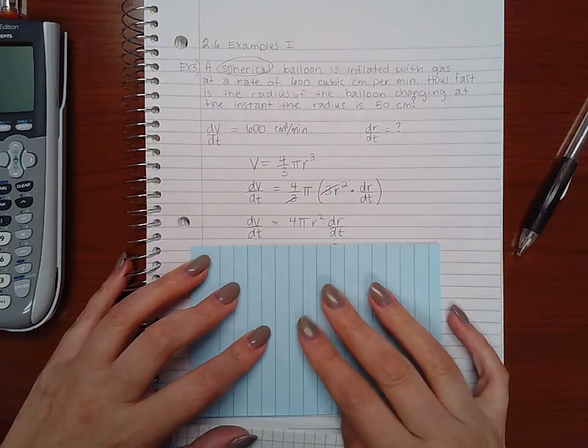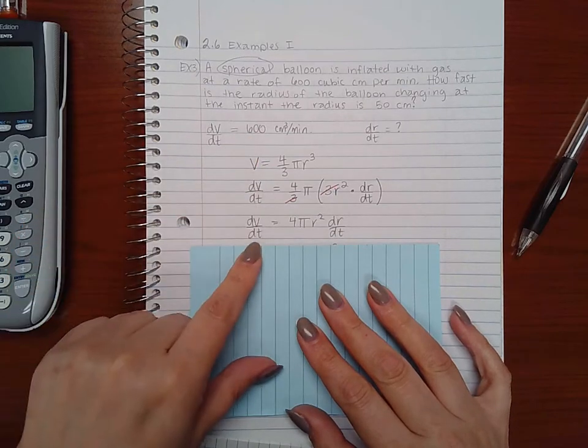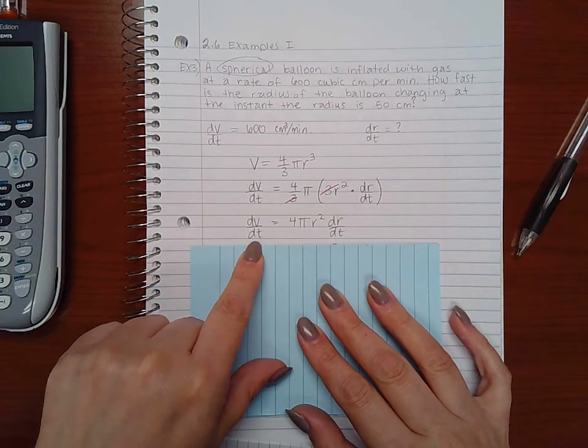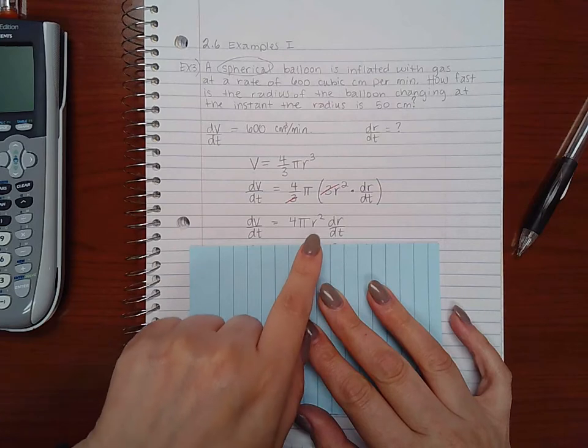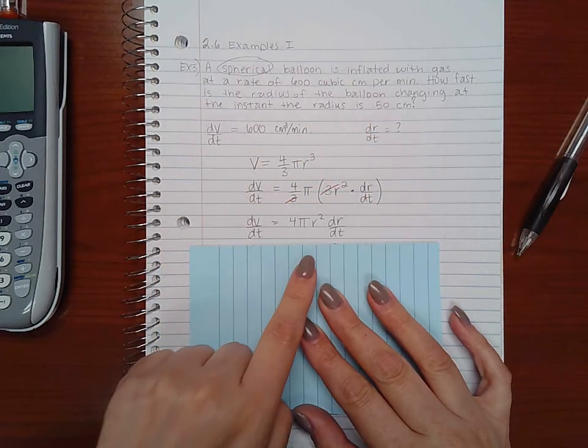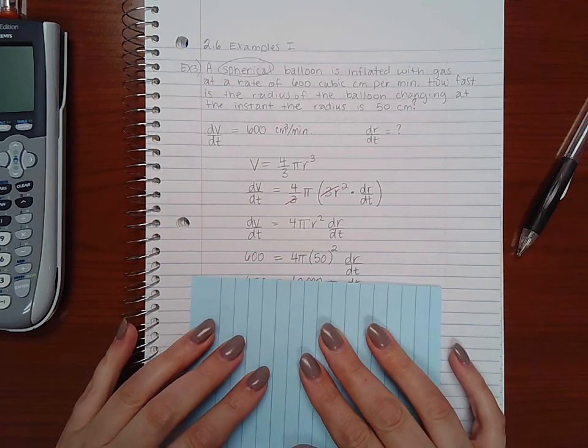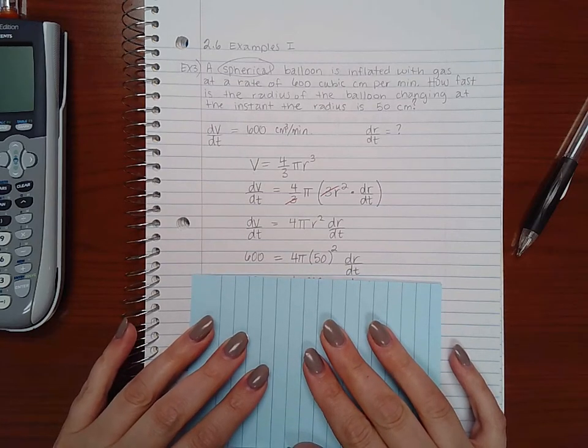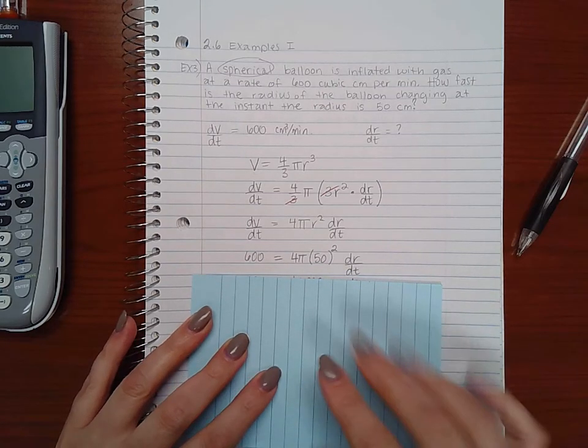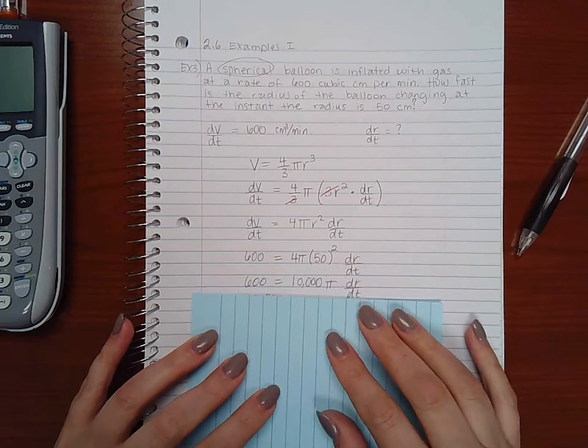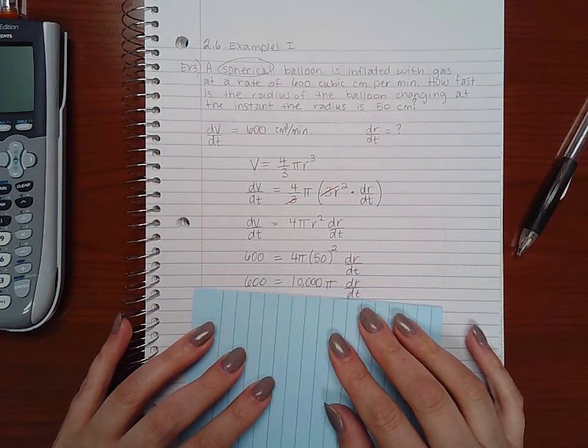Then I'm going to plug in the bits of information I was given. So 600 is going to get plugged in for dV/dt, and I do know r, the radius, is 50 centimeters, so 50 will get plugged in for r there. The only thing I don't know is dr/dt. So I simplified this expression here, and I got 10,000 pi times dr/dt.